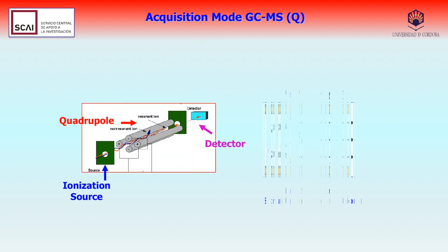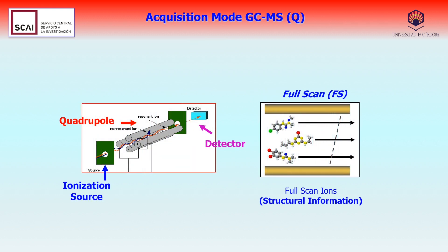The analyzer used is a simple quadrupole, and the acquisition mode that we will use is full scan, or complete ion scanning, which will provide us with structural information of the molecule.